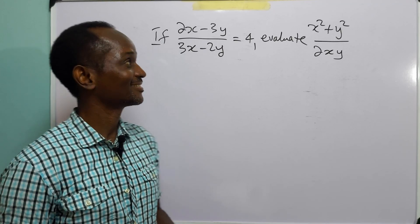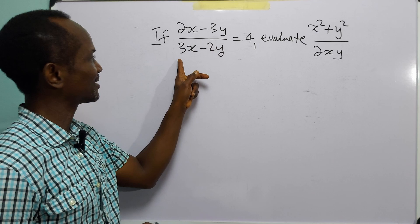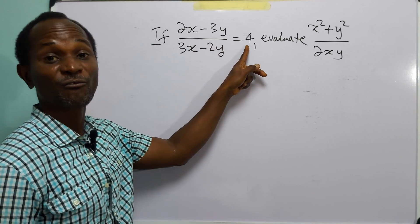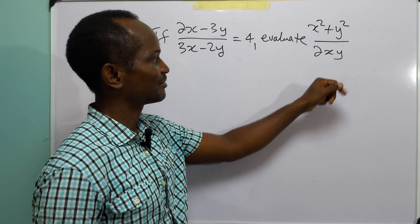Hello and welcome to today's exercise. The question is, given that 2x minus 3y divided by 3x minus 2y is equal to 4, evaluate x squared plus y squared divided by 2xy.